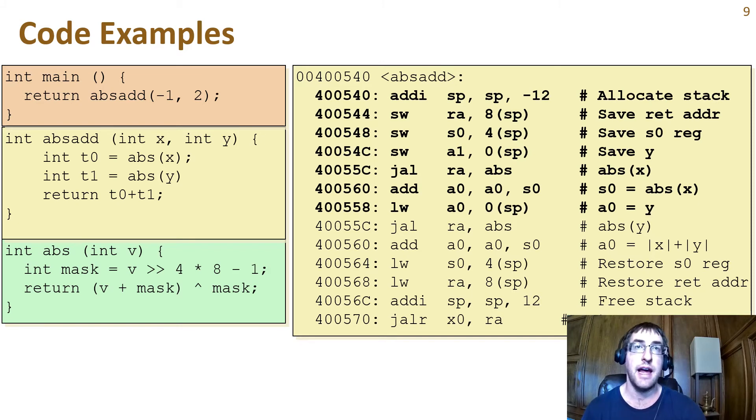Then we load back the value of y into the a0 argument register before we make the second call to abs. When that returns, we have absolute value of y in the return register a0, and absolute value of x is in s0.